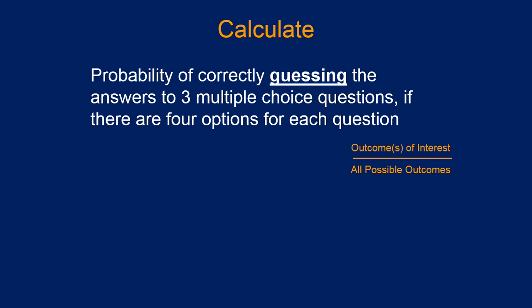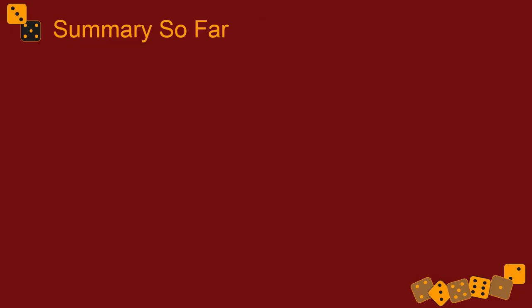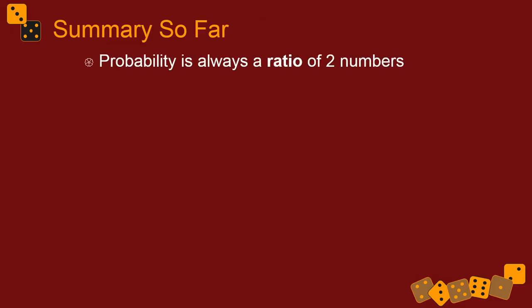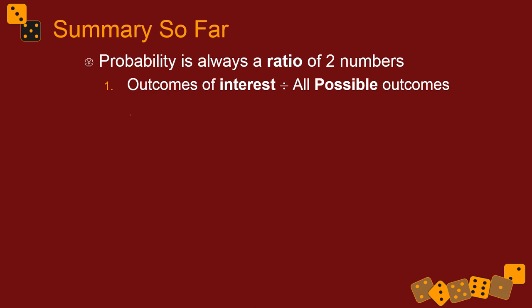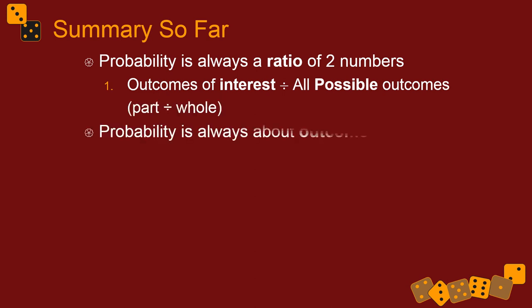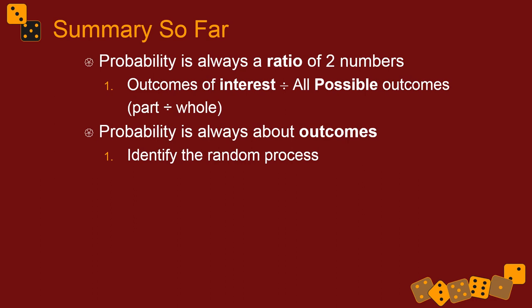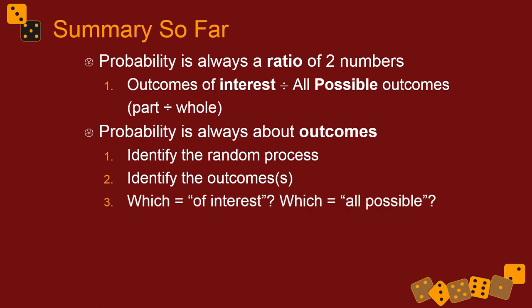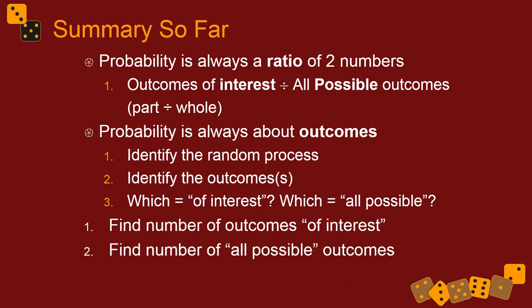For the summary so far: probability is always a ratio of two numbers — outcomes of interest divided by all possible outcomes. Probability is always about outcomes coming from a random process or event. If we can identify the outcomes from the process, we can identify which are of interest and which are all possible, divide, and we have a probability.